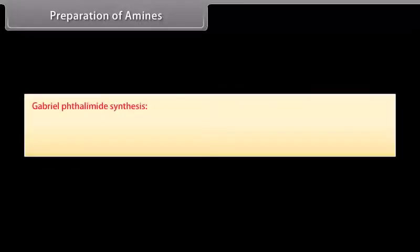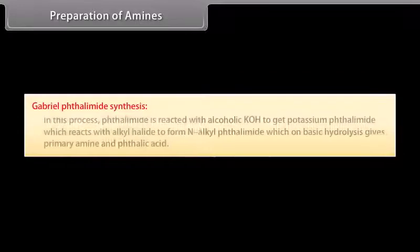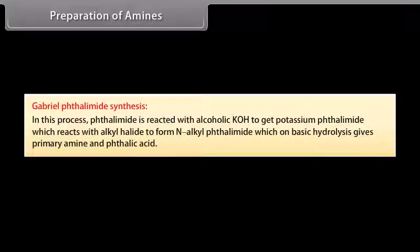Gabriel phthalimide synthesis: In this process, phthalimide is reacted with alcoholic KOH to get potassium phthalimide, which reacts with an alkyl halide to form N-alkyl phthalimide, which on basic hydrolysis gives a primary amine and phthalic acid.